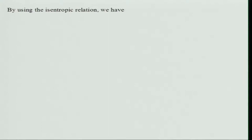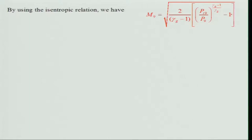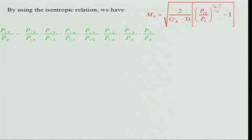Using isentropic relations, M_9 = √{(2/(γ_G−1)) [(P_t9/P_9)^((γ_G−1)/γ_G) − 1]}. Now we write the total pressure ratio P_t9/P_9 as a product of ratios across each component: P_t9/P_t5 · P_t5/P_t4 · P_t4/P_t3 · P_t3/P_t2 · P_t2/P_t0 · P_t0/P_0 · P_0/P_9.